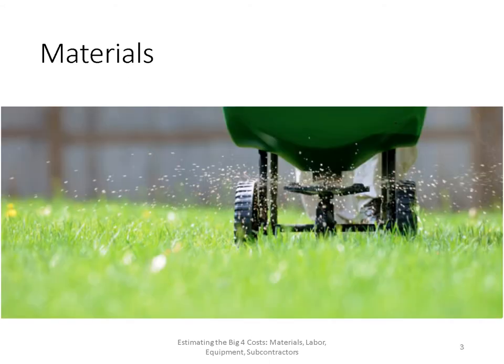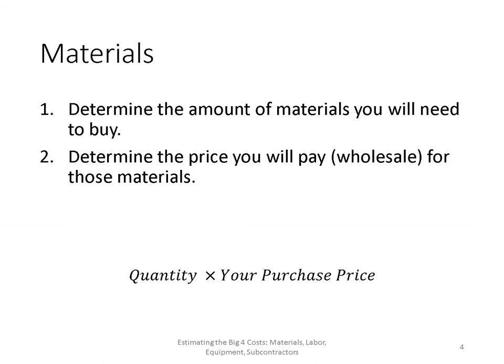First up, materials. Determining your material cost is fairly straightforward. You need to determine the quantity of materials you need to buy and then the price you pay for those materials — typically a wholesale price. We're assuming you're a contractor or a company that purchases from a wholesale distributor. It can be tricky to get some of these costs if you are not currently a contractor, but we'll take a look at some of these in greater detail.